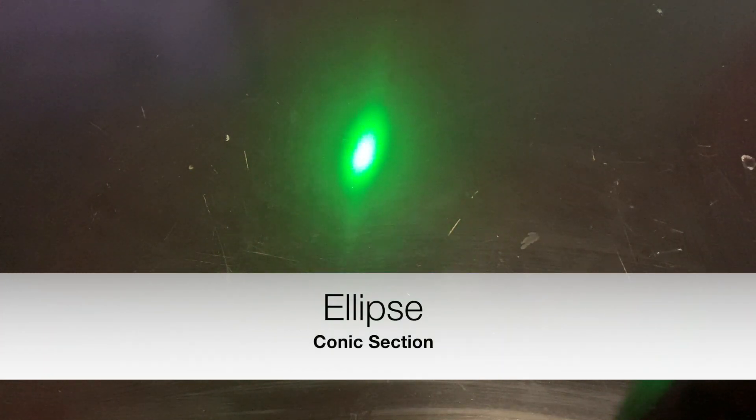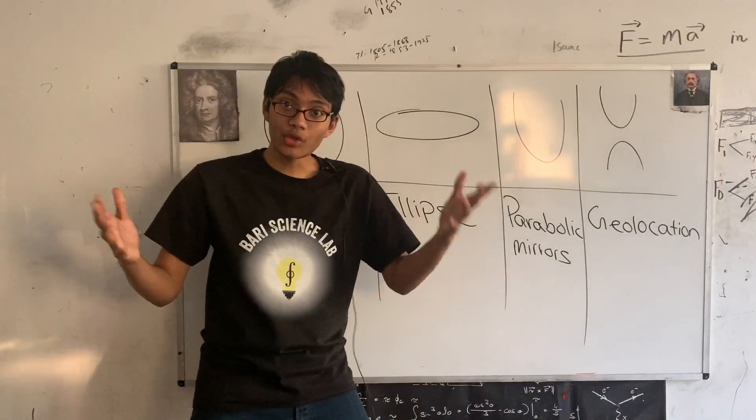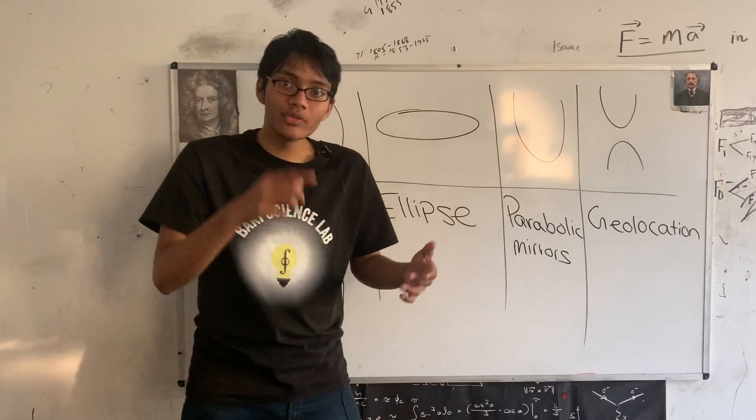And now bring it closer and closer to the table and you notice this ellipse almost explodes into a kind of parabola, right? Alright, so you've seen how we can use lasers to actually make conic sections in real life.